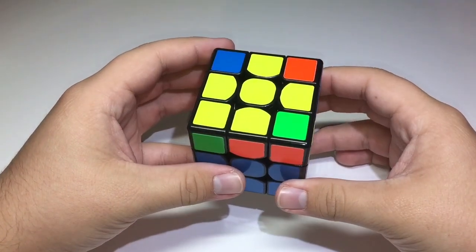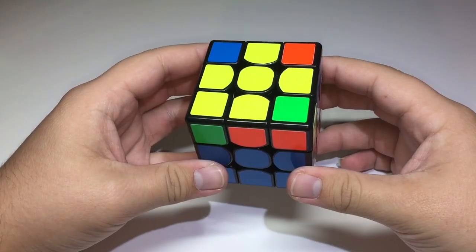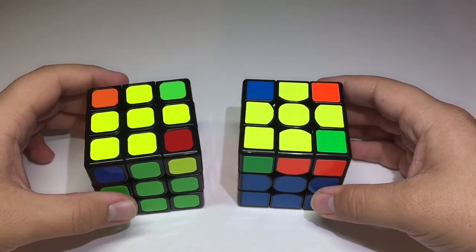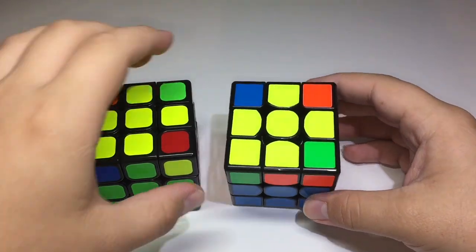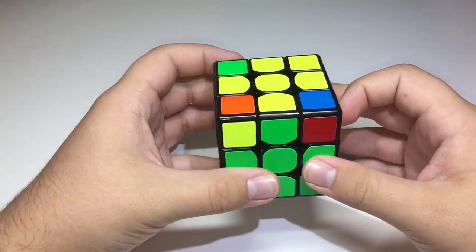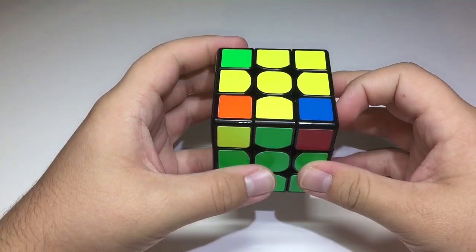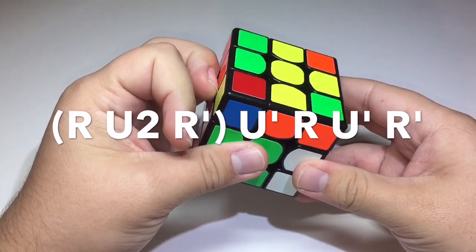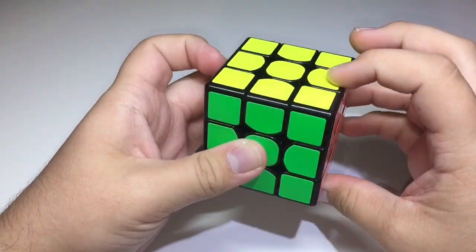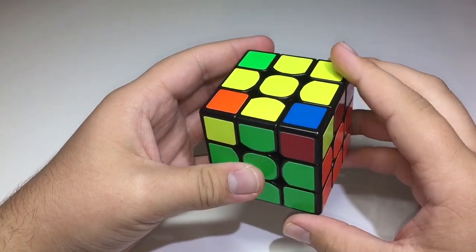So the next case we're going to be looking at is this one, and it looks a lot like the last one we did, but instead of the yellow sticker being here, it's in the back. So you hold the cube right here, and you do this algorithm. Double flick, and performed fast.